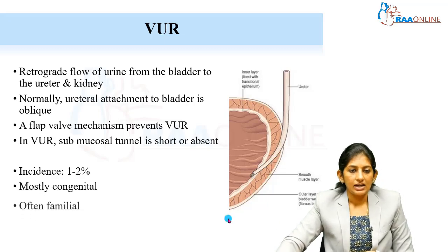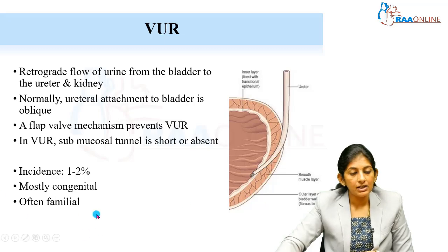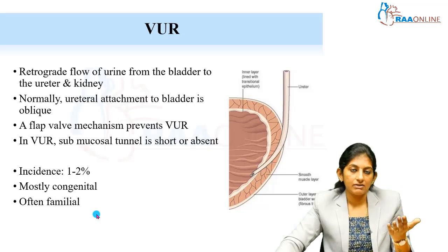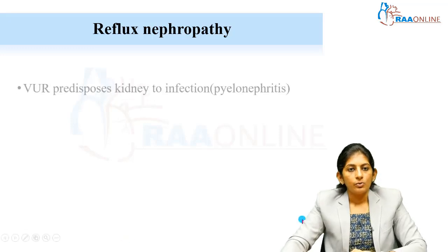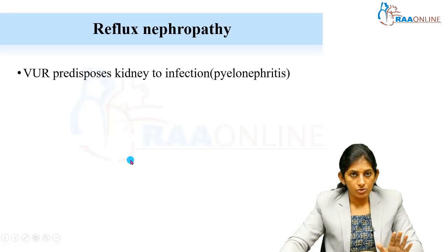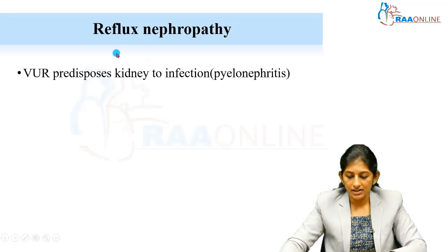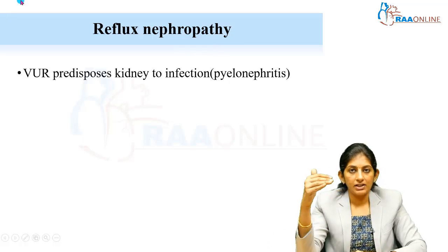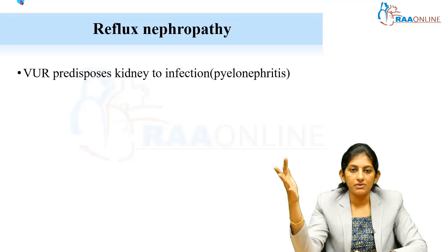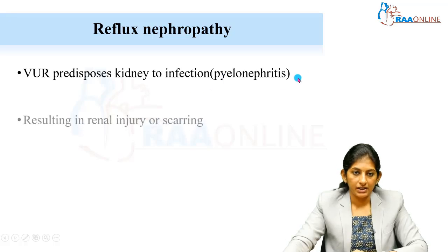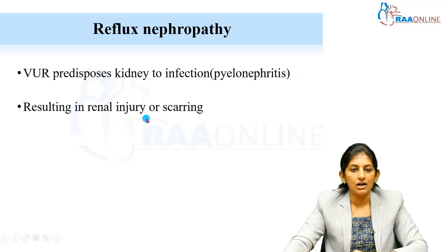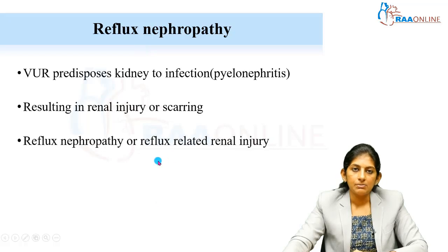VUR is mostly congenital, and 50 to 60 percent of cases have a familial incidence — we will discuss the genes involved shortly. VUR can cause renal scarring, which leads to end-stage renal disease. This is called reflux nephropathy — VUR predisposes the kidney to infection, specifically pyelonephritis, resulting in renal injury or scarring. This is collectively referred to as reflux nephropathy, or reflux-related renal injury.